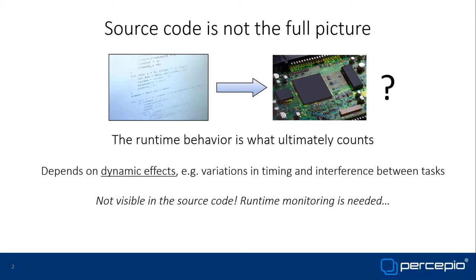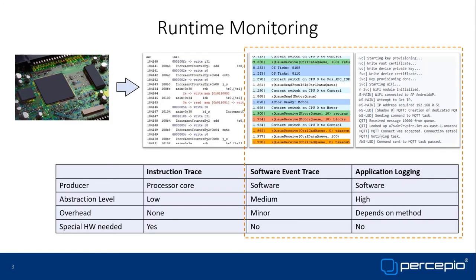Such dynamic effects are emergent properties not visible in source code. To get the full picture, you also need runtime monitoring. There are at least three types. The most common is application logging, where printf debugging is a prime example — very flexible, but often associated with considerable overhead. Outputting a string of 15 characters over a UART at 115 kB takes about one millisecond, which is unacceptably slow in many situations, and it's often not appreciated to have printf lines all over the code.